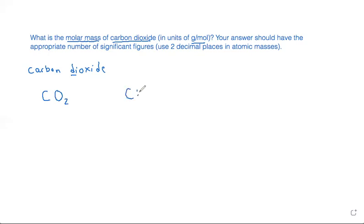For carbon, I have the molar mass from my periodic table is 12.011, and for oxygen from my periodic table I have the molar mass of oxygen is 15.999. But in the problem it says to use two decimal places in atomic masses.